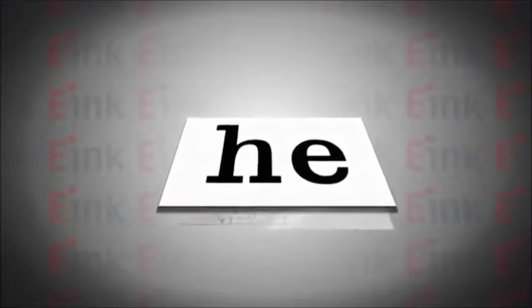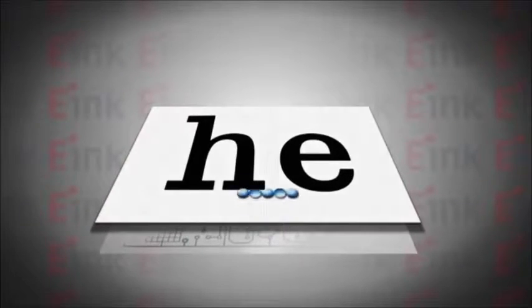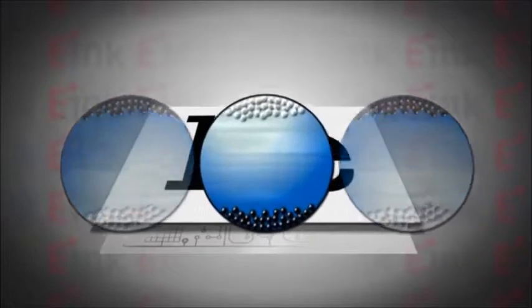One display contains millions of capsules. The ink actually rearranges electronically to form the text and graphics. For example, let's look at how the word is created.